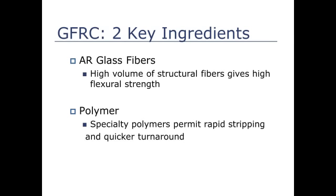We talked about fibers — they are the key structural element, and they're a little easier to grasp because they're physical. High volumes of structural fibers give you high flexural strength. The other key ingredient of GFRC that allows you to produce the way you want is the polymer — an admixture added to the concrete. It's a very special kind of polymer that permits pieces to be stripped out of the mold very quickly, lets you start working on them faster, and gives the concrete a little more strength — or more accurately, prevents it from becoming weaker.